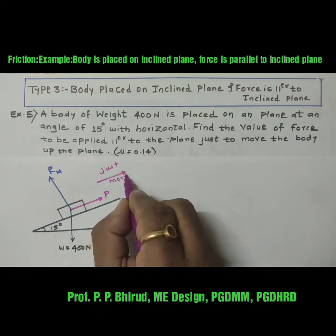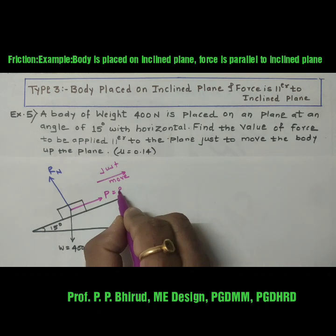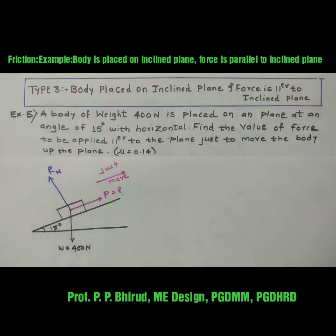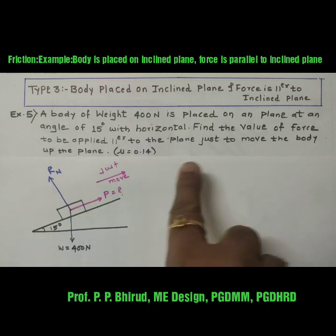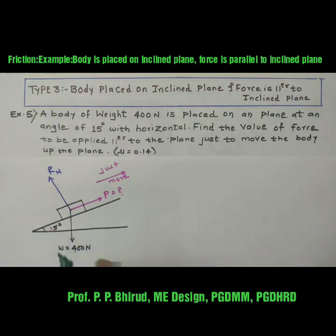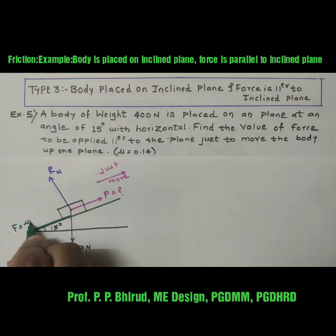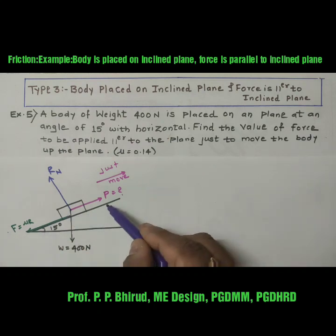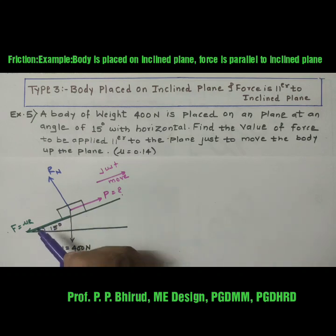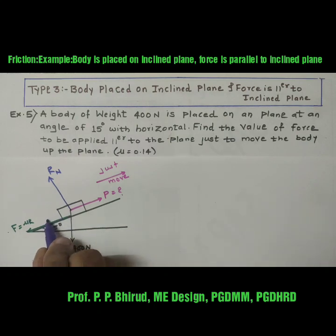Since motion is in the upward direction, the friction force acts in the downward direction. The frictional force F is equal to mu R. Now, W is inclined to the inclined plane, so we have to resolve W into its orthogonal components.